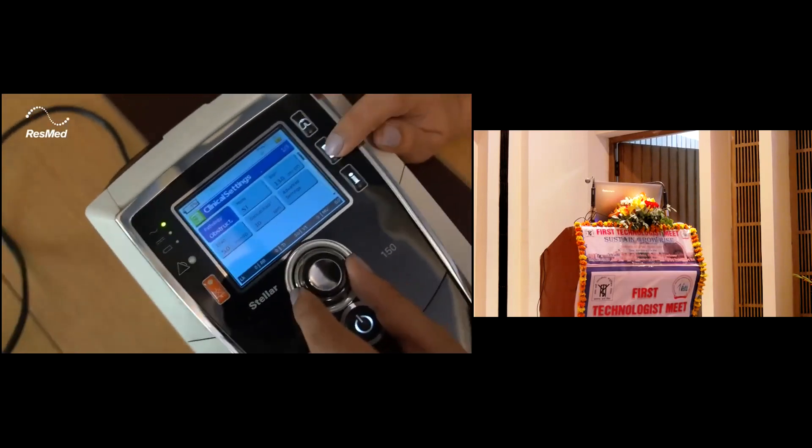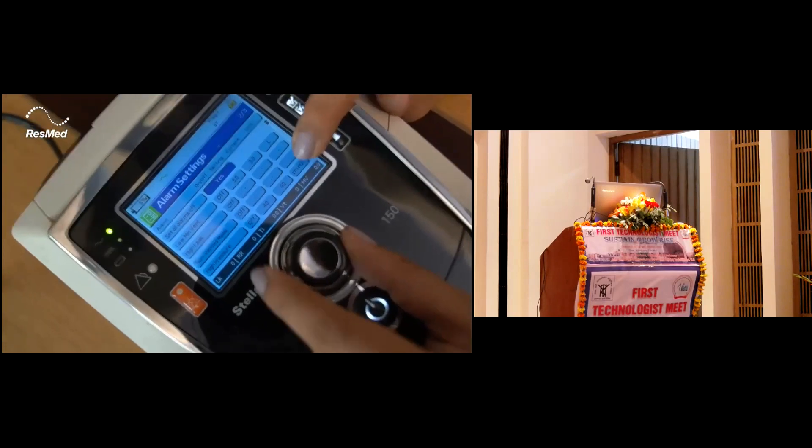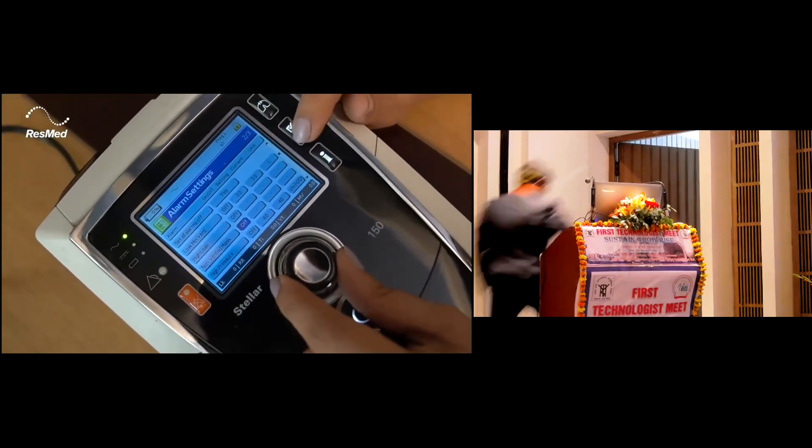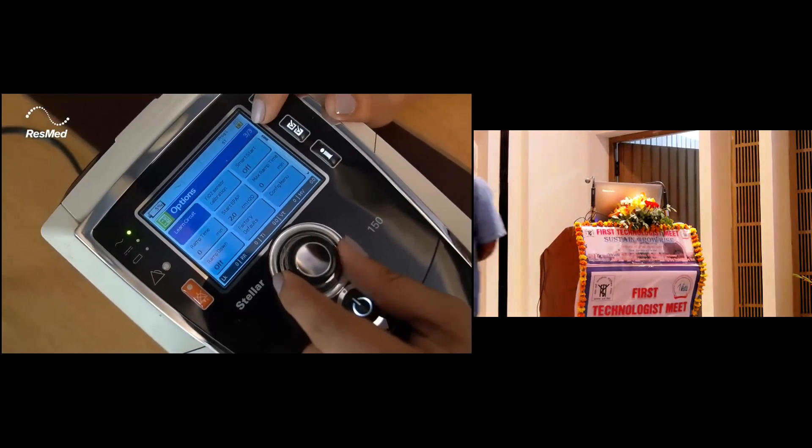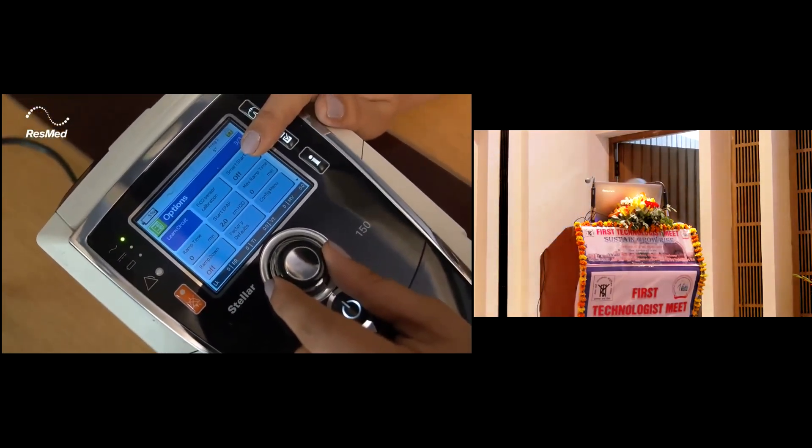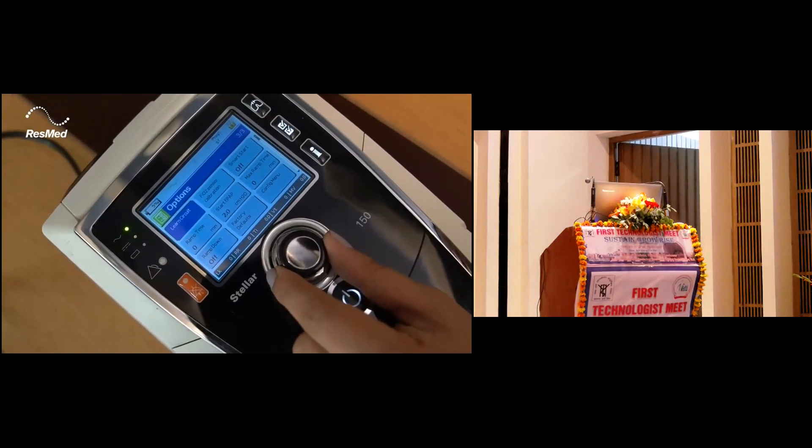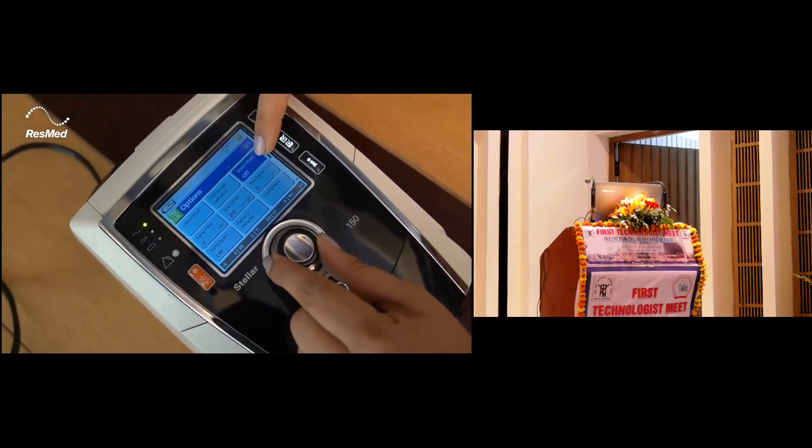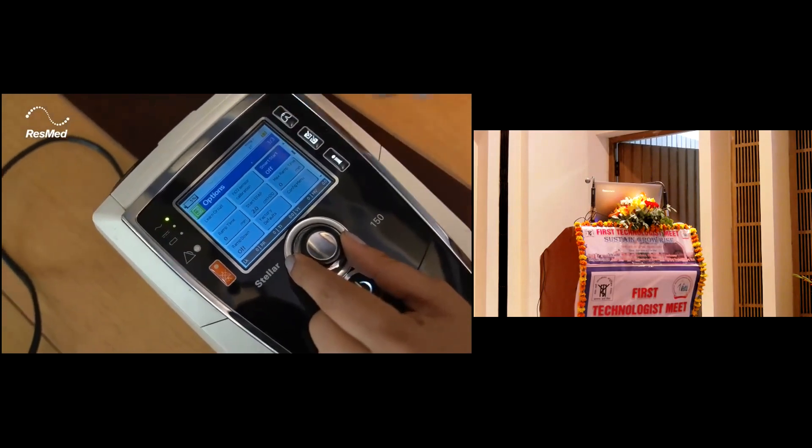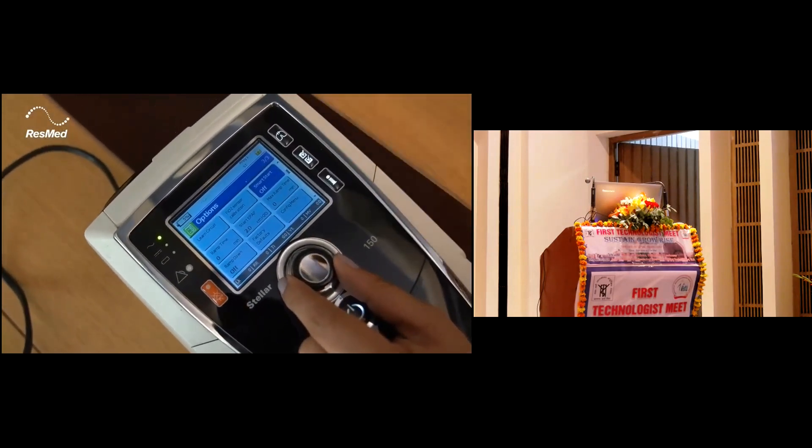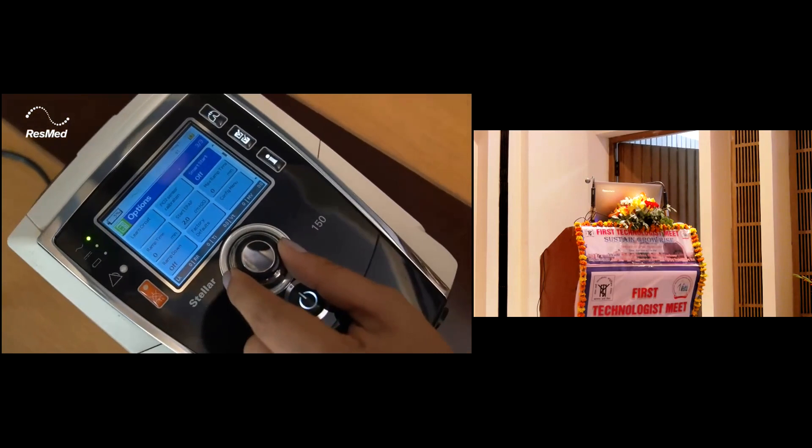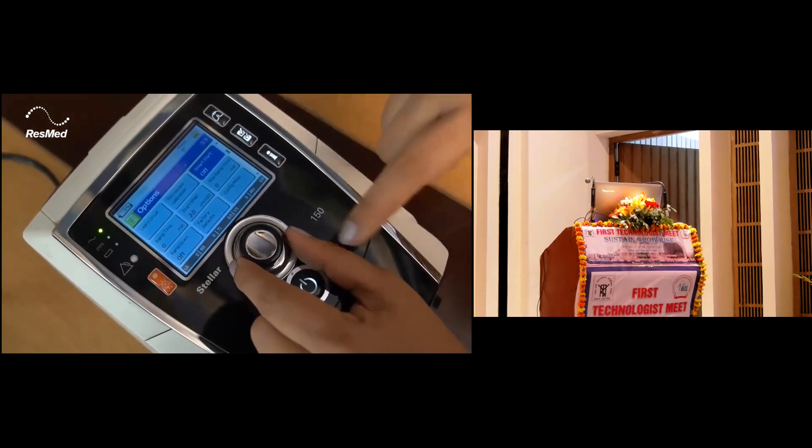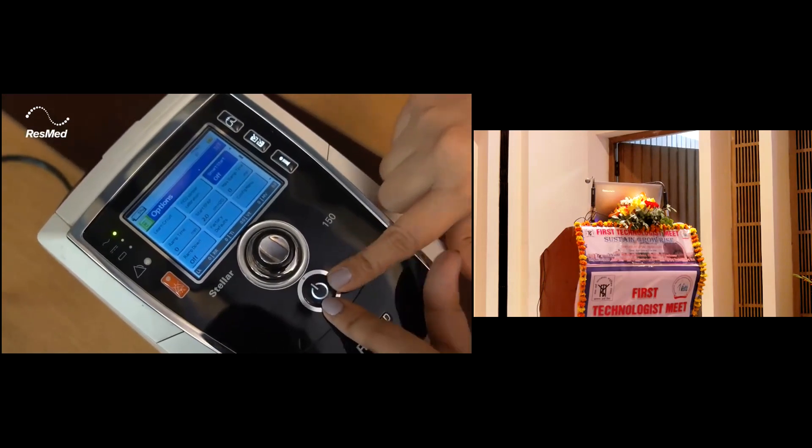If you click on these settings again, you can get the alarm settings. You can set the alarms as per your clinical requirements. On page 3 out of 3, you have other extra options like learn circuit, FiO2 calibration, and smart start. Smart start is a feature wherein the device can understand that the patient has worn the mask and start the therapy by itself without clicking the power on button.